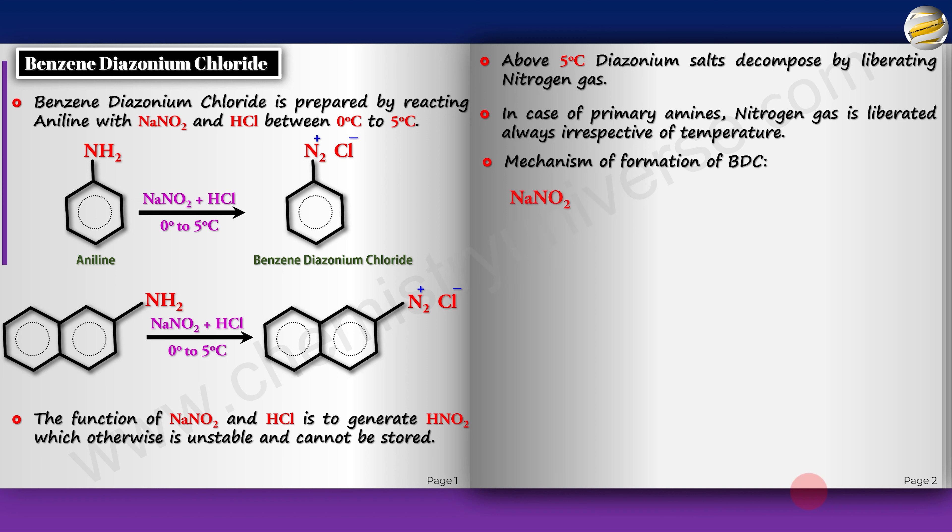You have NaNO2 and HCl first forming HNO2 nitrous acid and NaCl. This nitrous acid looks like this. In the presence of HCl, it will take an H+, and it is generally the O that takes the H+. This will eliminate water and you get NO+, the nitrosonium ion.